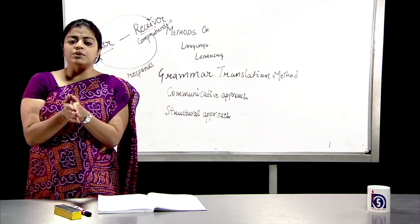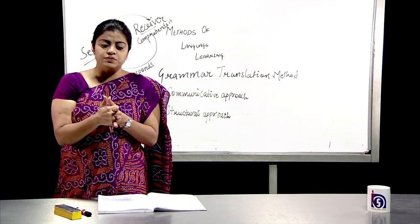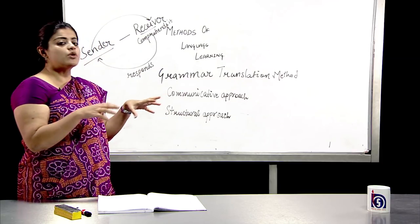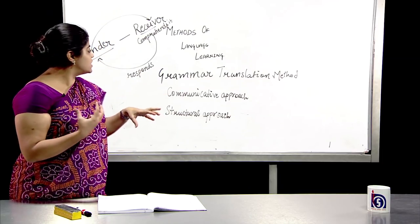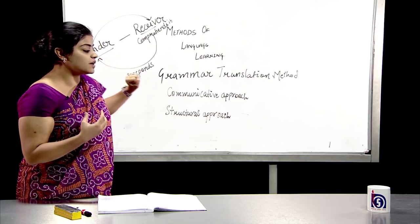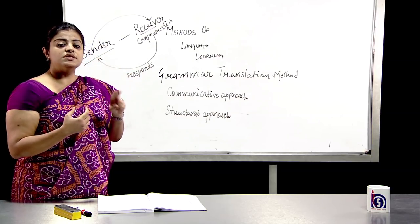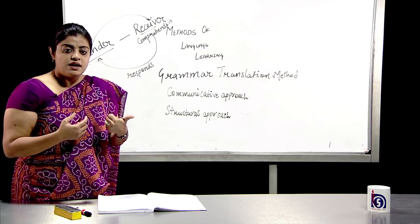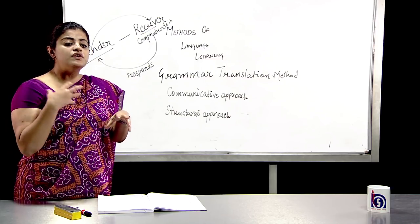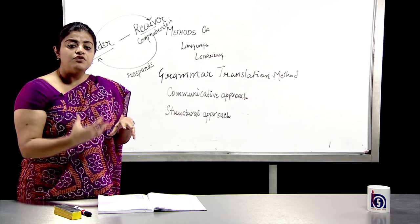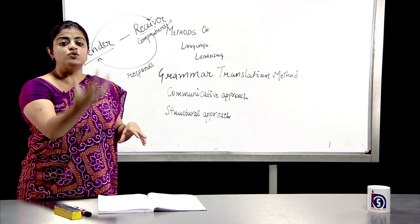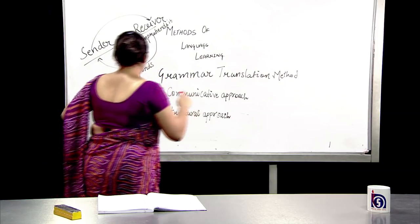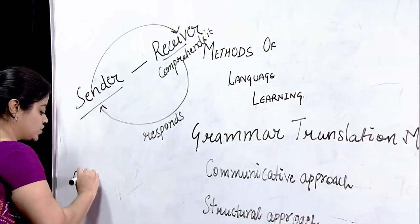How can we use the communicative approach in classrooms? In a classroom with multiple students, the first thing that comes to mind is that we need at least two students in one group, working in pairs. The onus of learning is transferred from teacher to the student. The first and major feature of the communicative approach is that it is a child-centered approach.